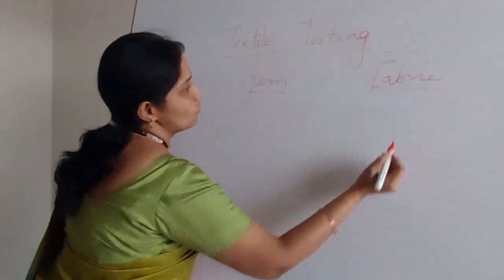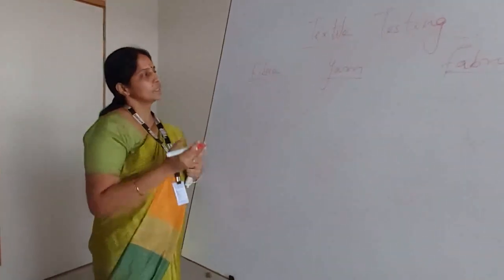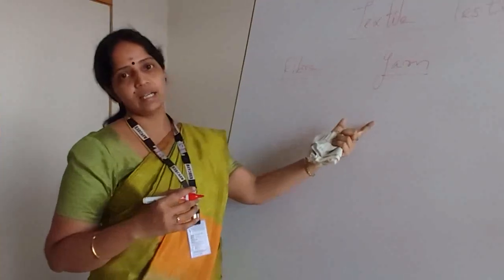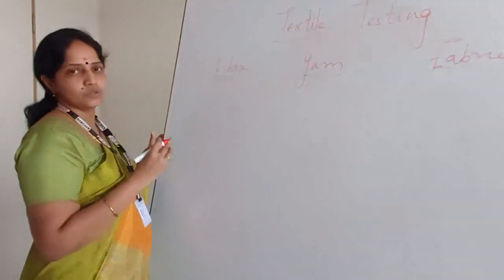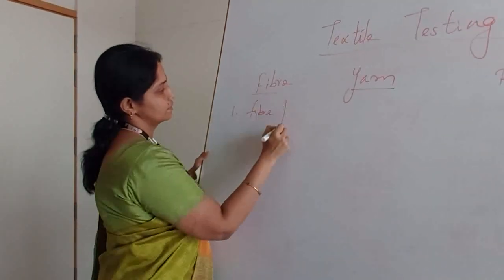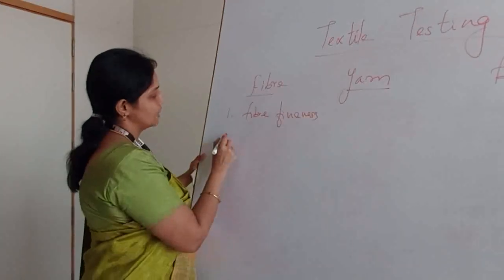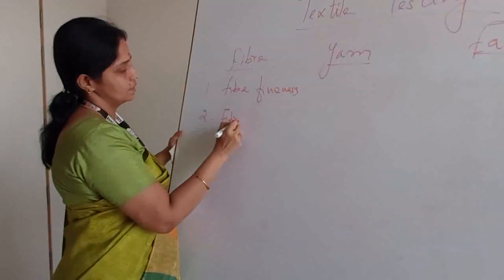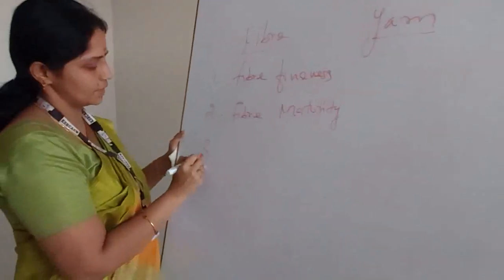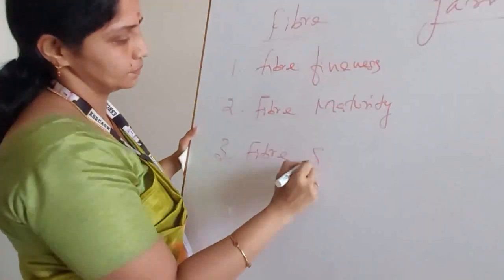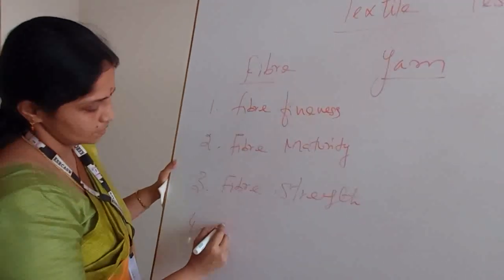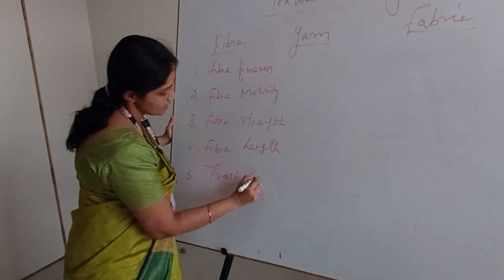So now what we are going to see is what are the parameters or what are the tests connected for fiber, yarn, and fabric, and what are the instruments used for this. The first parameter is fiber fineness. The second one is fiber maturity. The third one is fiber strength — the strength of the particular fiber. And the fourth one is lint content.